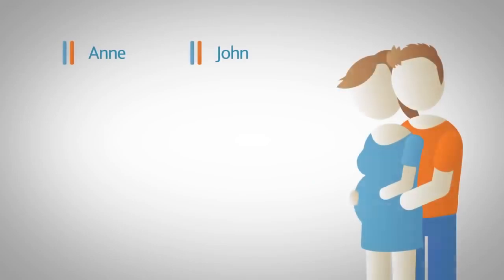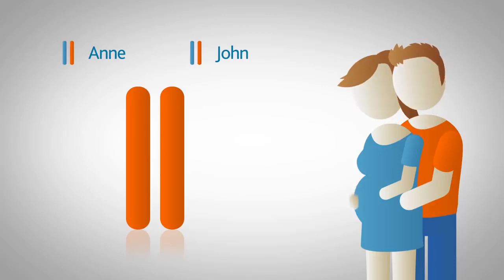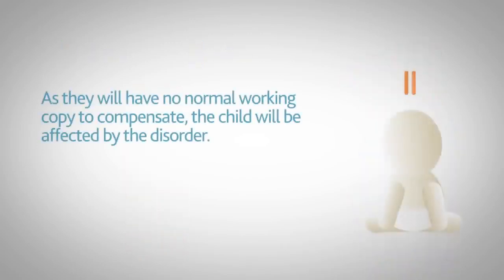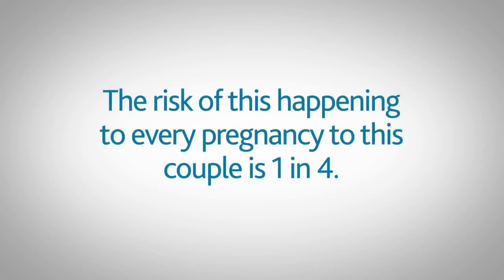However, when it comes to having children, if Anne and John both pass a copy of this non-working gene onto a child, the child will inherit two non-working copies of the gene. As they will have no normal working copy to compensate, the child will be affected by the disorder. The risk of this happening to every pregnancy to this couple is one in four.